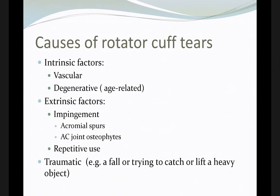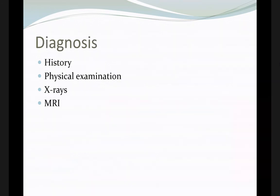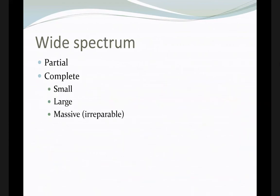Causes of rotator cuff tear can be vascular (ischemia), degenerative over time with age, or from impingement — as we mentioned, impingement is one of the main causes of rotator cuff tear — through repetitive injury in a narrow space. The tear can occur acutely with trauma. The spectrum is wide: it can be a single muscle, partial or complete, small or large.